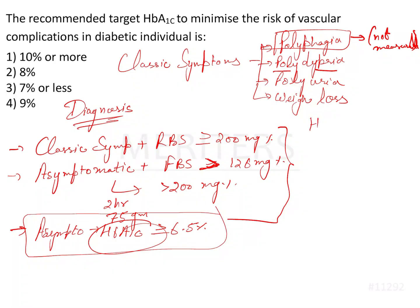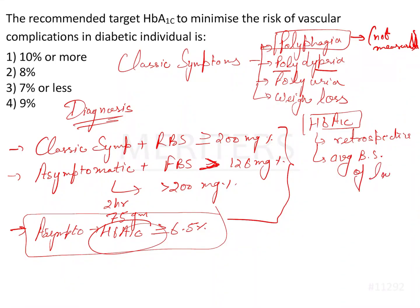HbA1c, also known as glycosylated hemoglobin, is basically a retrospective test. It is not a one-time value — it gives an average value of the blood sugar level over the last 3 months. That is why it is more reliable. It is also not affected by exercise and fasting.